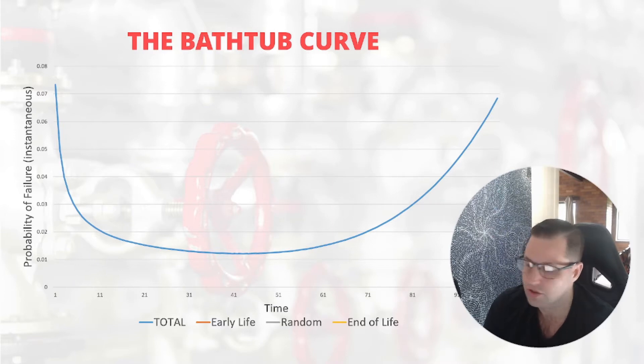What it's trying to illustrate is that there are three potential phases of an asset's life. The first phase is the early life, characterized by a decreasing or descending probability of failure.